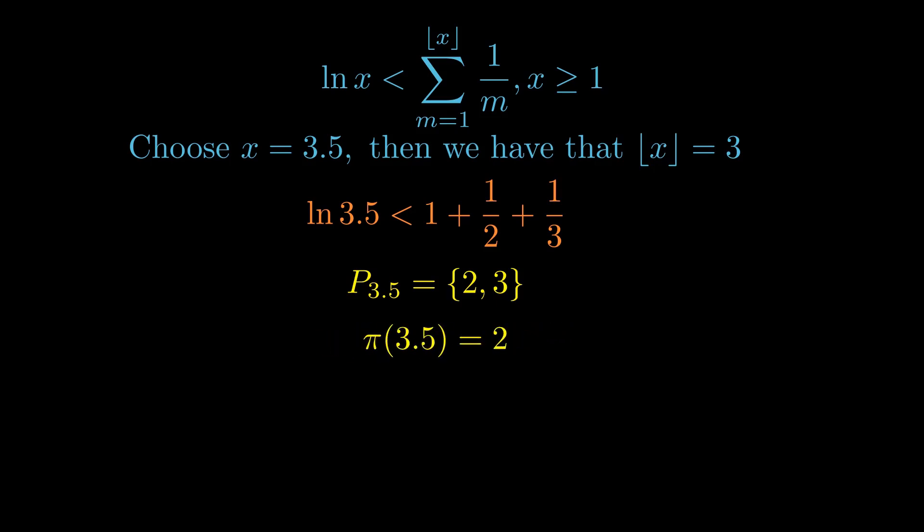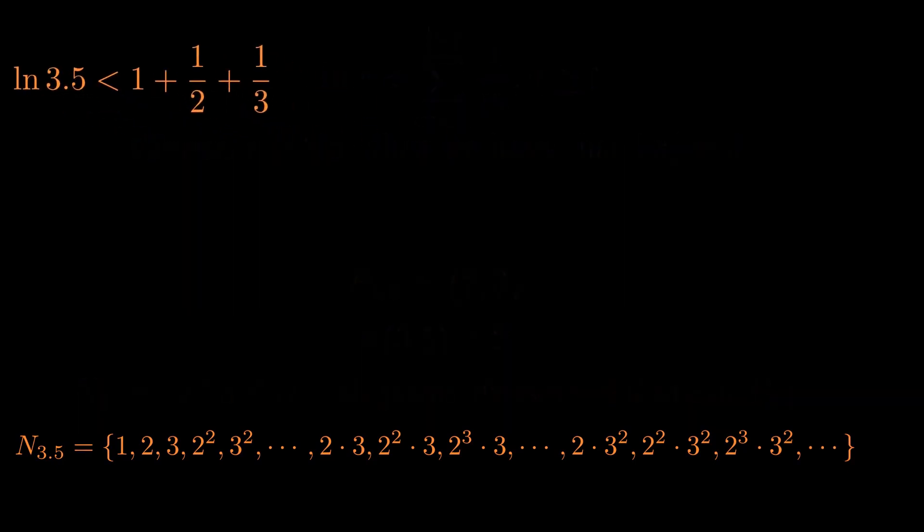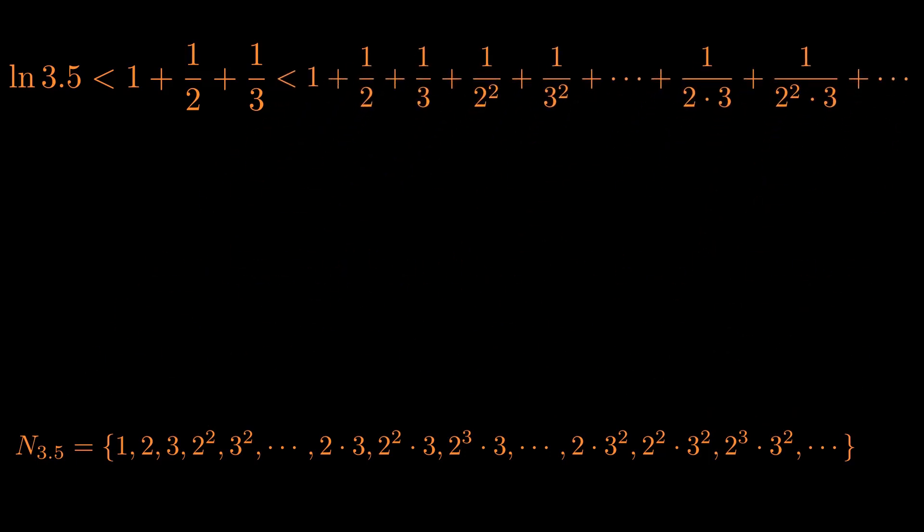We then introduce another set N subscript x, which contains all the natural numbers whose prime divisors are all in P subscript x. Using this, we try to construct the set N subscript 3.5. The first element is one since one has no prime divisors. To check, this is vacuously true. The remaining elements are all the numbers that can be expressed as products of the primes 2 and 3 in various combinations and powers.